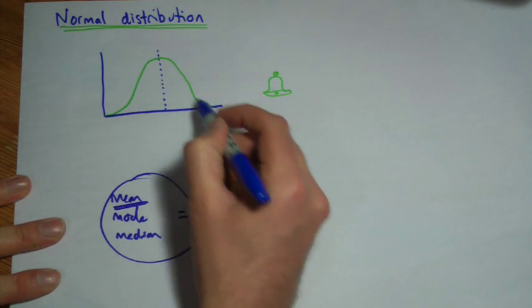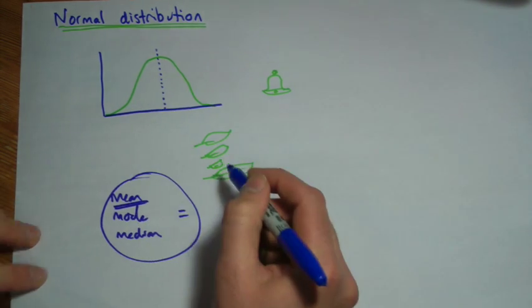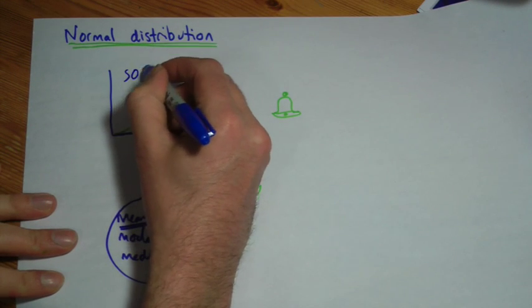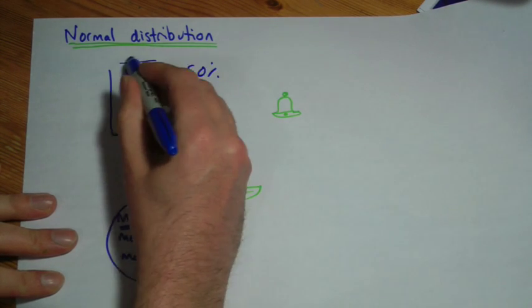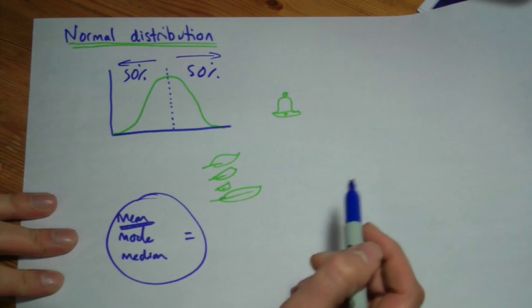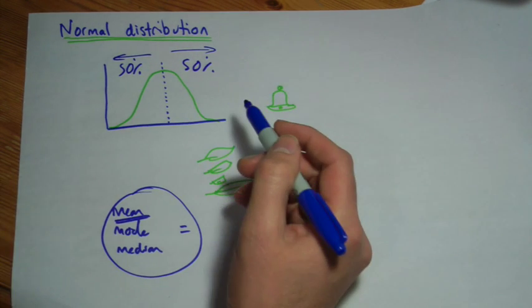We've got this symmetrical spread of data, and I've not quite drawn it so well, but it should be symmetrical around each side of the mean. And 50% of our values are on one side, in other words below average, 50% would be above average, if we have a normal distribution.